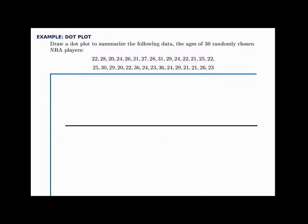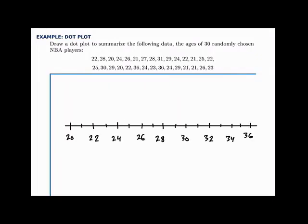Scanning through, the lowest value is around 20 and the highest is about 36. So let's draw an axis with values from 20 up to 36. Now we read through each data point and put a dot above the corresponding value. For the first value at 22, we put a dot above 22. Then we have 28, so we put a dot at 28. For the next value at 20, then 24, 26, 21, 27, and then another 28 — the second time we've seen 28, so we draw the second dot right above the first.